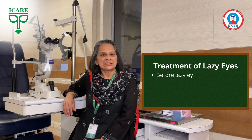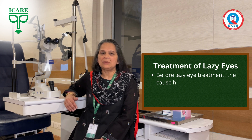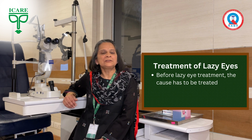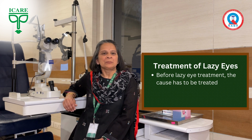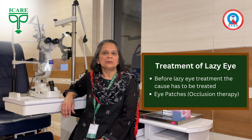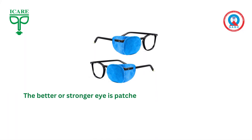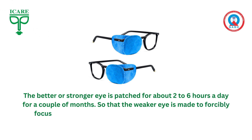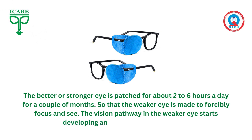Once a lazy eye is detected, first the cause has to be treated — it may be a cataract, may be a squint, or spectacle glasses may need to be given. After that, we come to the lazy eye treatment itself. The standard treatment for a lazy eye all over the world is eye patches — what we call occlusion therapy. It is recommended to patch the better, or stronger, eye for about 2 to 6 hours a day for a couple of months, so that the weaker eye is made to forcibly focus and see, allowing the vision pathway in the weaker eye to develop and vision to be restored.